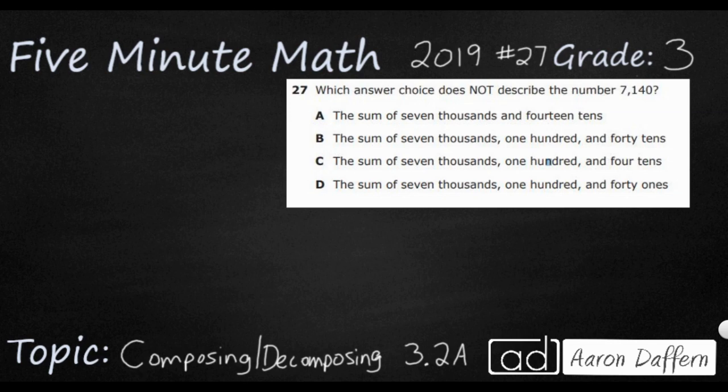So this is one of those tricky math test questions. It looks pretty simple, but first we need to understand that we're looking for the answer choice that does not describe 7,140. That means that three of these actually do — we're looking for the one that does not.